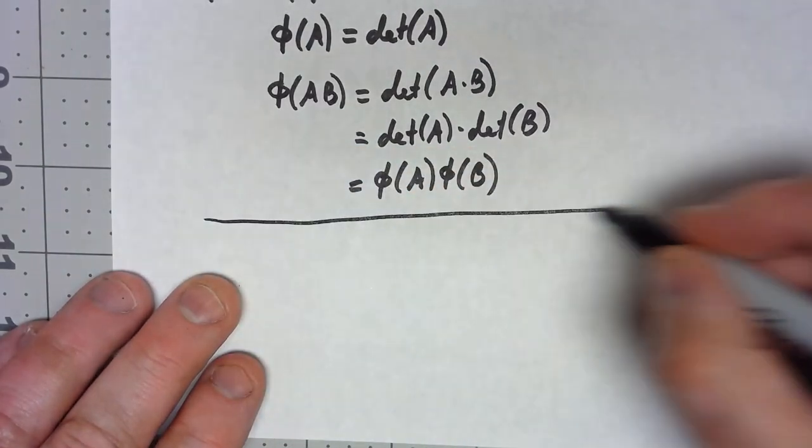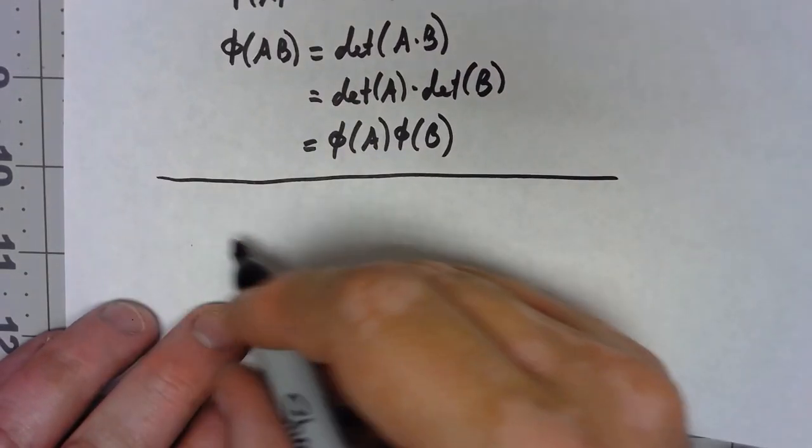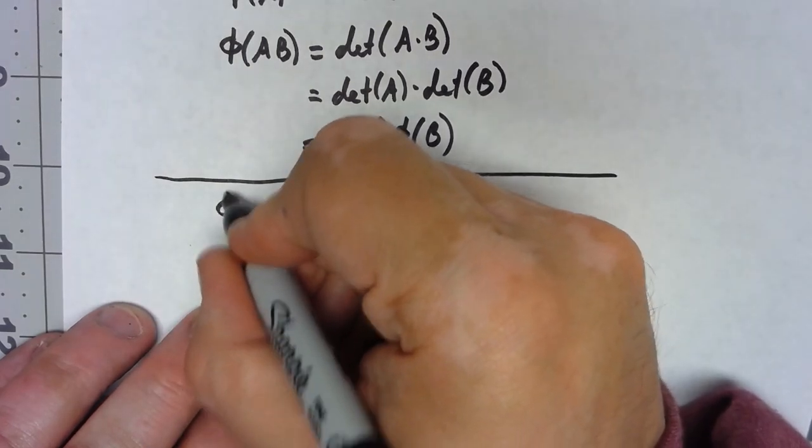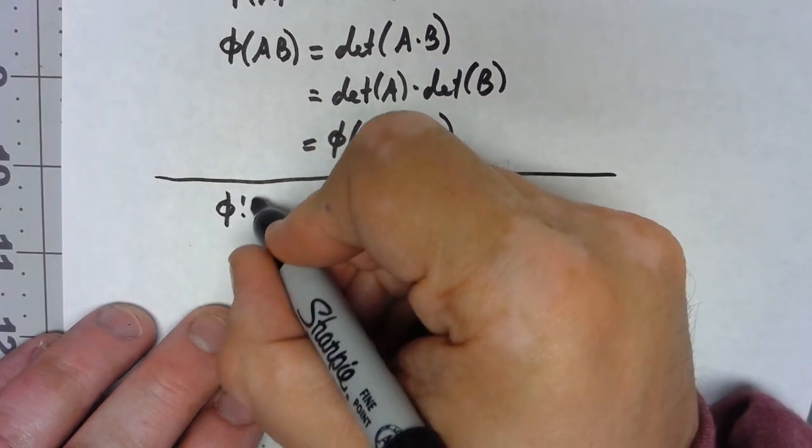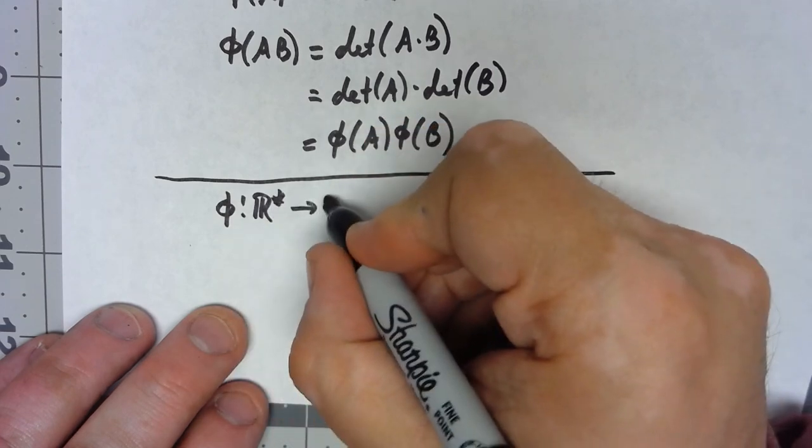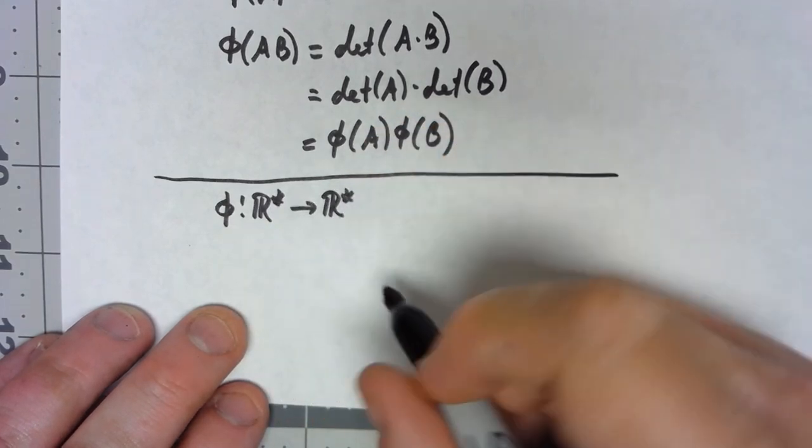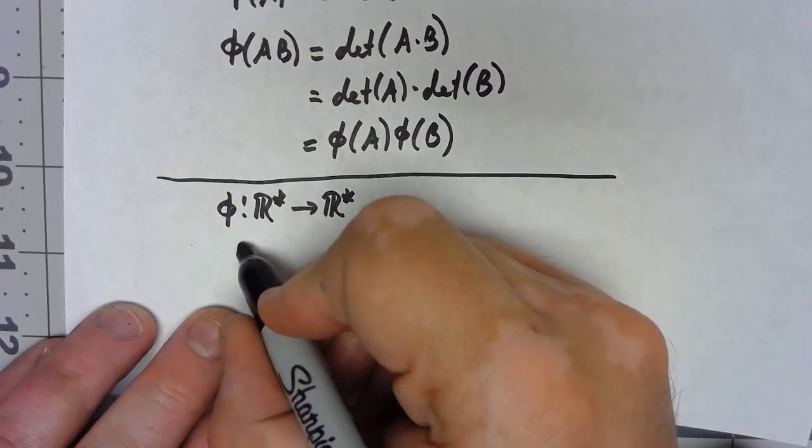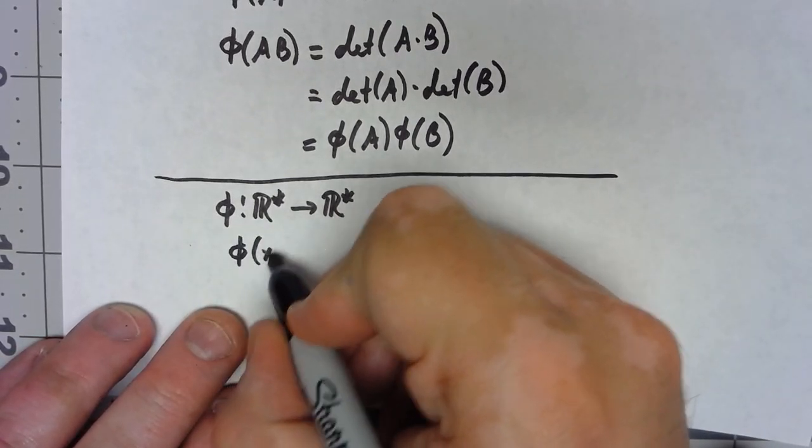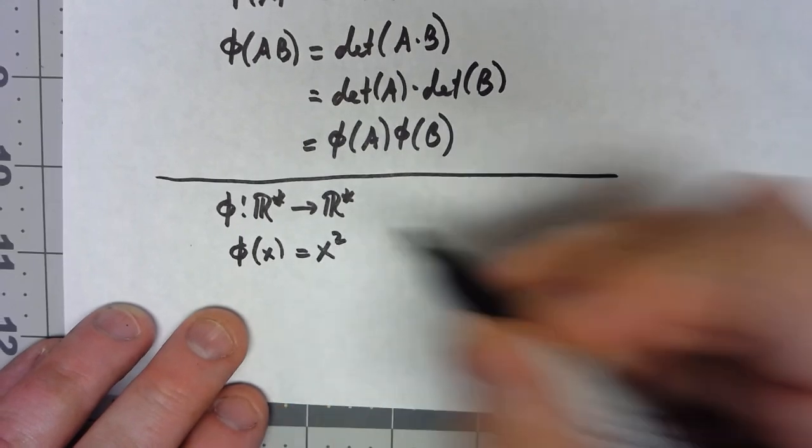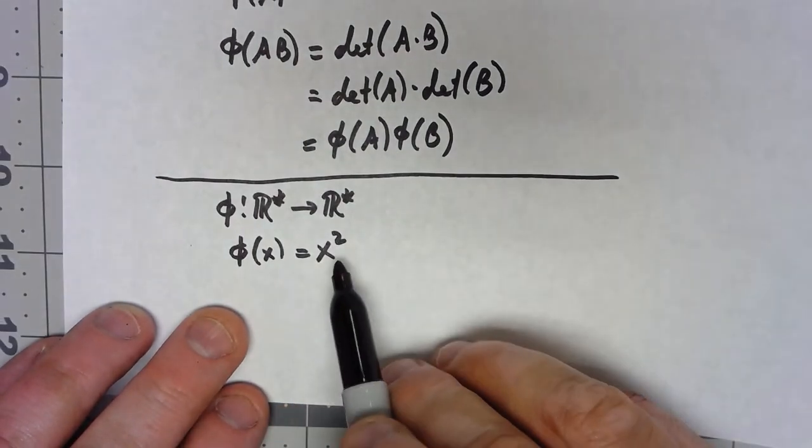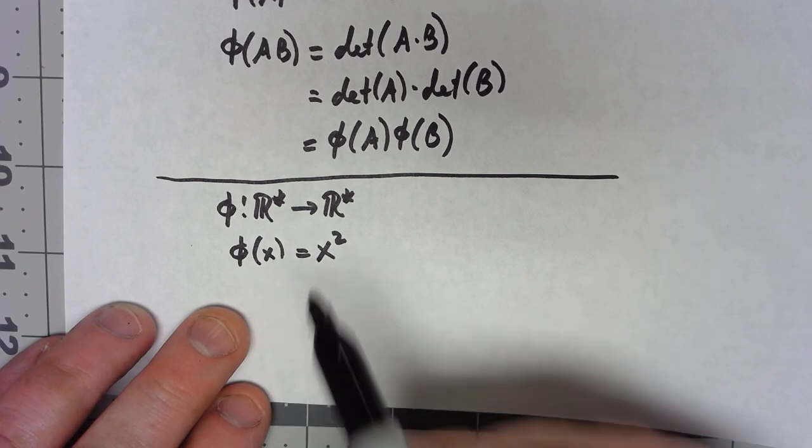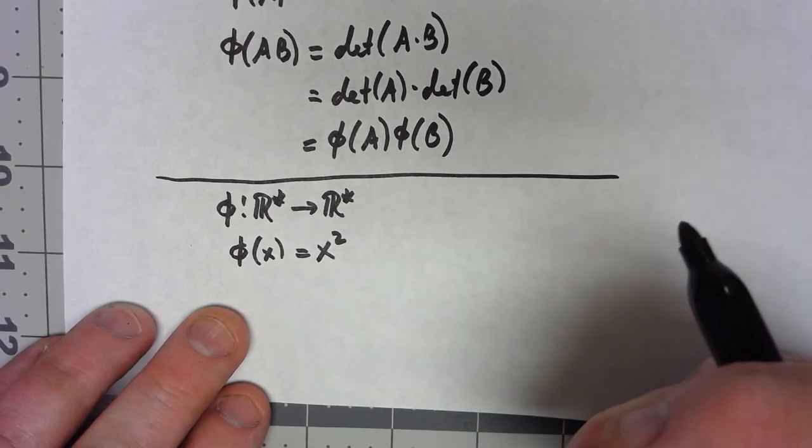Let's look at one more example, and that is let's say we've got phi mapping R star into R star, so non-zero reals into non-zero reals, by phi of x equals x squared. This one's interesting compared to the previous examples because the other ones actually both ended up being onto functions. This one is not, because we're never going to get any negative outputs from this function.